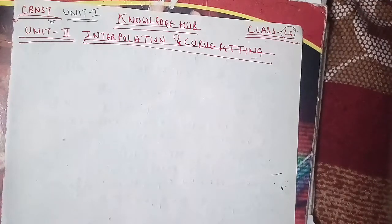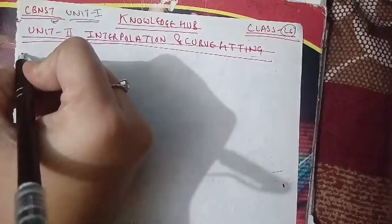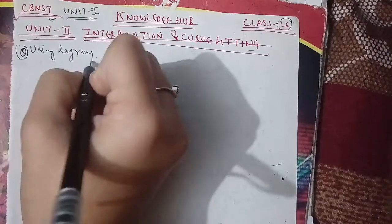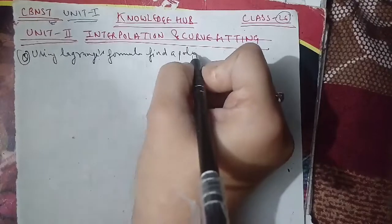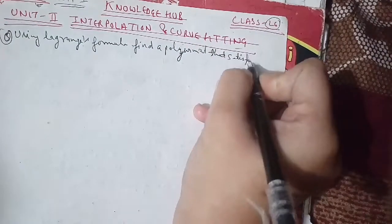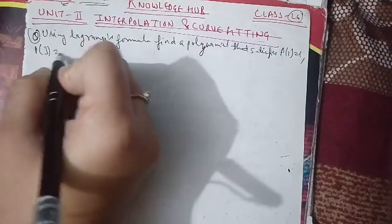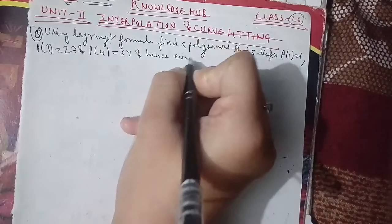Now we have a question using Lagrange formula: find a polynomial that satisfies p(1)=1, p(3)=27, and p(4)=64, and hence evaluate p(2). So the question is: using Lagrange formula, find a polynomial that satisfies these conditions and find the value of p(2).